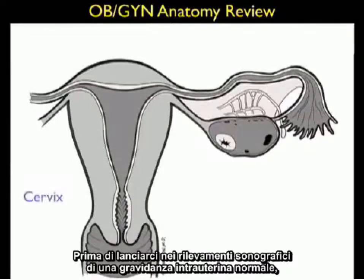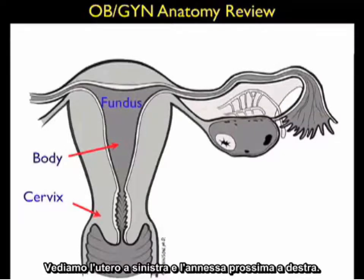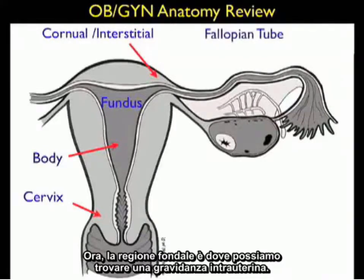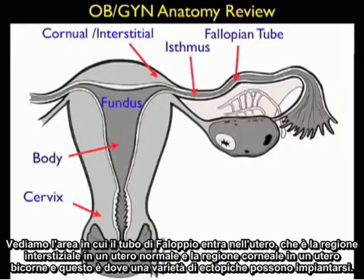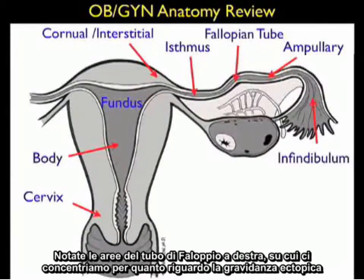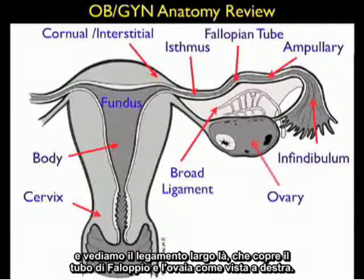Before launching into the sonographic findings of a normal intrauterine pregnancy, let's quickly review the OBGYN anatomy important for this application. We see the uterus to the left and adnexa to the right. Notice the areas of the uterus: the lower cervix, the intermediate body, and the fundal region towards the top — where we define an intrauterine pregnancy to be located. We see the interstitial region where the fallopian tube enters the uterus in a normal uterus, and the corneal region in a bicornuate uterus, where some variants of ectopics can implant. We also see the broad ligament encasing the fallopian tube and the ovary to the right.